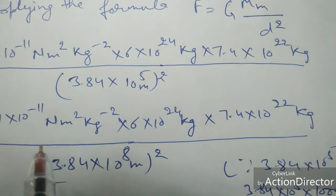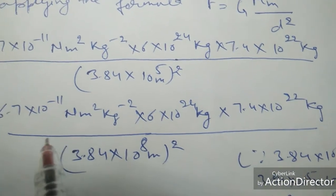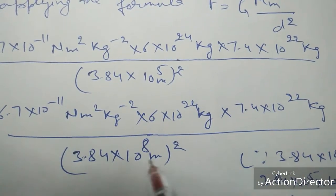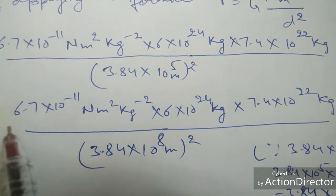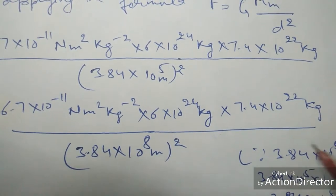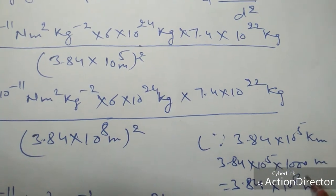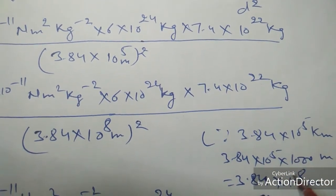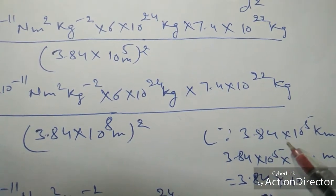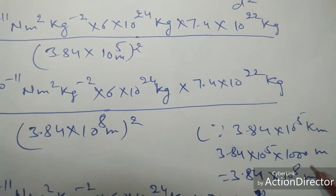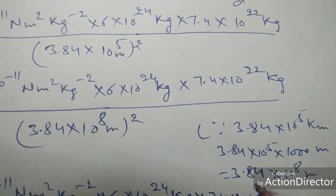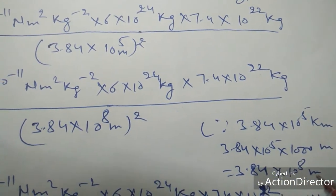First of all, we will convert the kilometers into meters. Here I have shown how to convert kilometers into meters by multiplying this 3.84 × 10⁵ by 1000. It will come out to be 3.84 × 10⁸ meters.